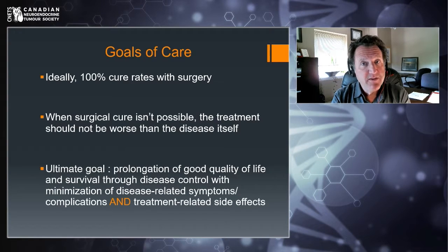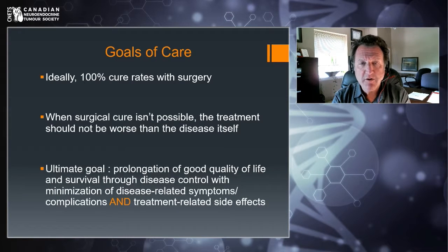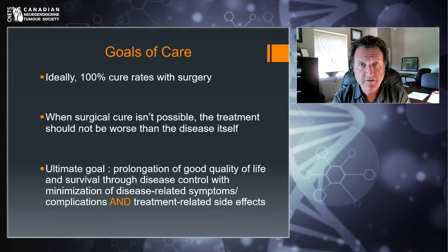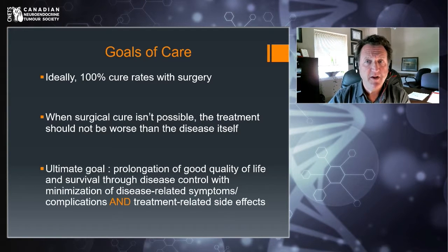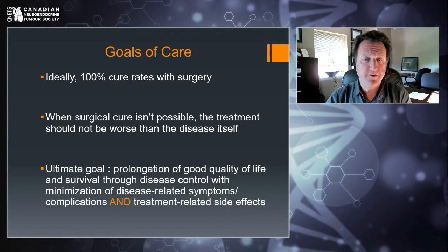Whenever we think of treatments in cancer medicine, and especially in neuroendocrine tumors, our ultimate goal is prolonging good quality of life and good quality survival. How do we do that? We try to control the disease along with minimizing symptoms or complications from the disease, and equally importantly, side effects from the treatment. I'll come back to this theme throughout my talk today.